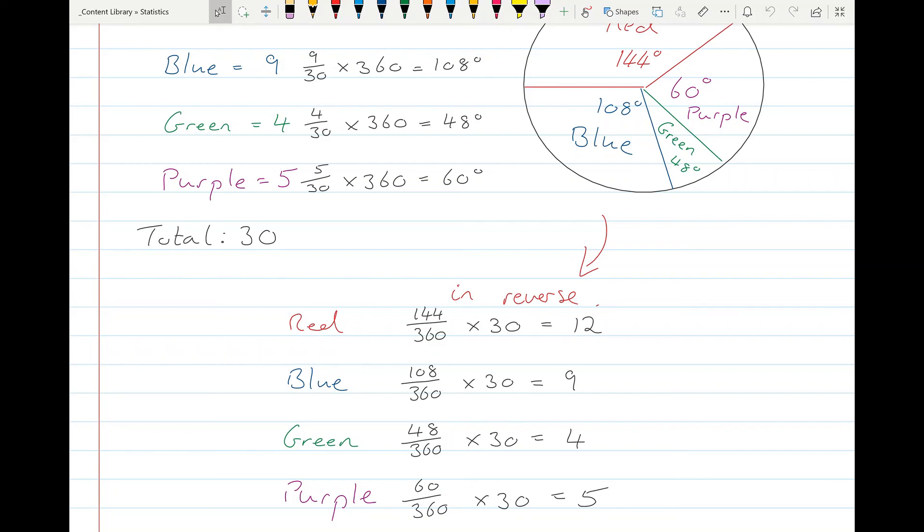The same for blue, 108 degrees was how much blue was given out of 360, multiply it by 30 and you get 9. Green 48 over 360 times 30 gives us 4, and purple 60 over 360 by 30 gives us 5.